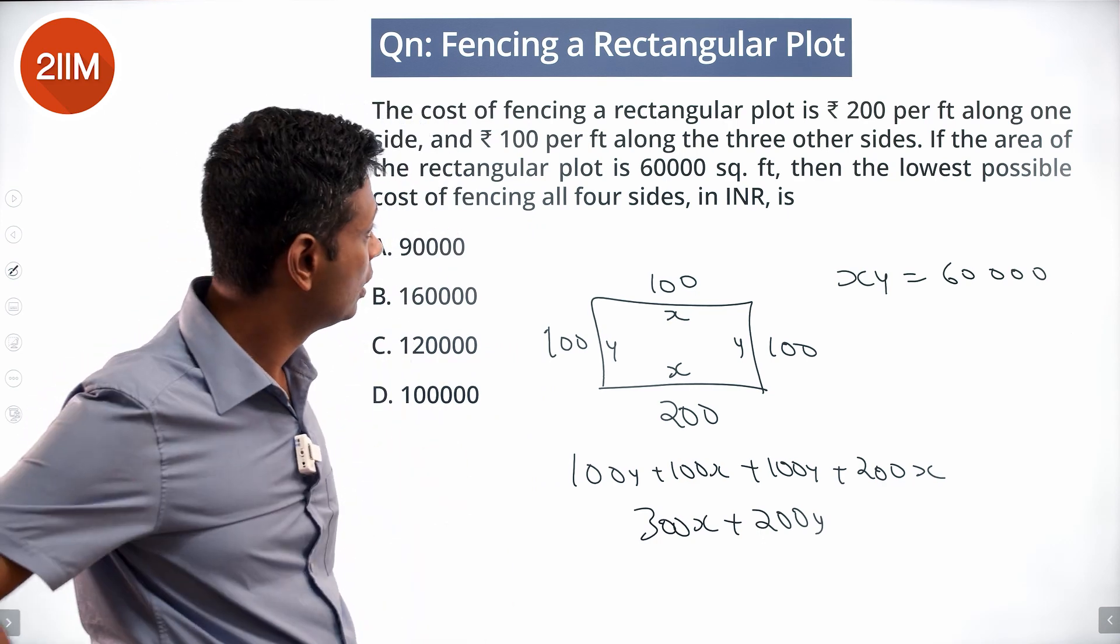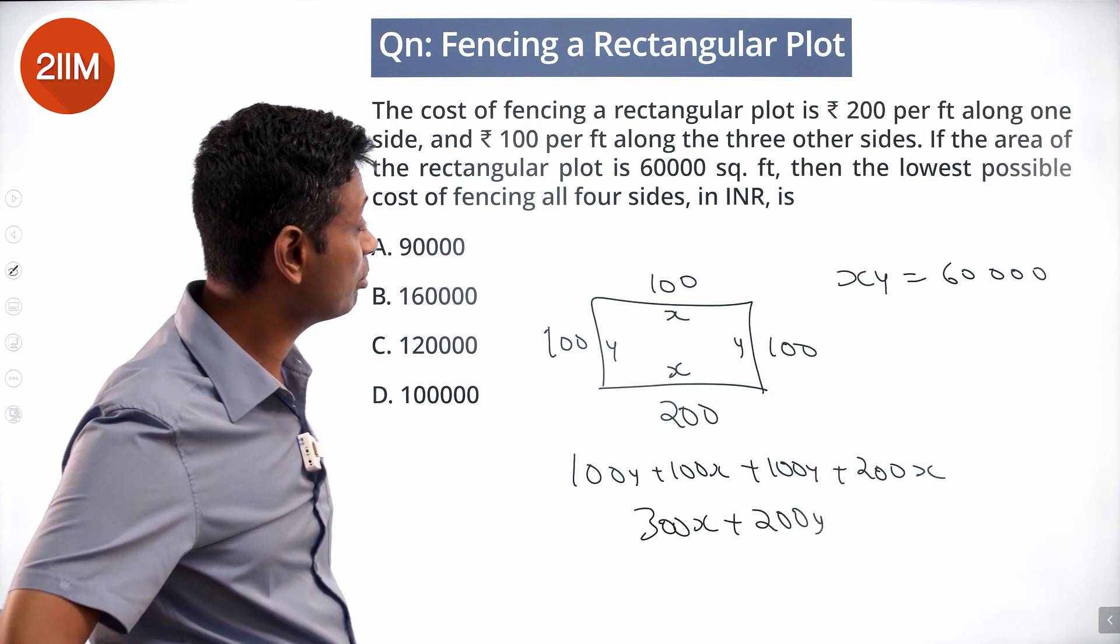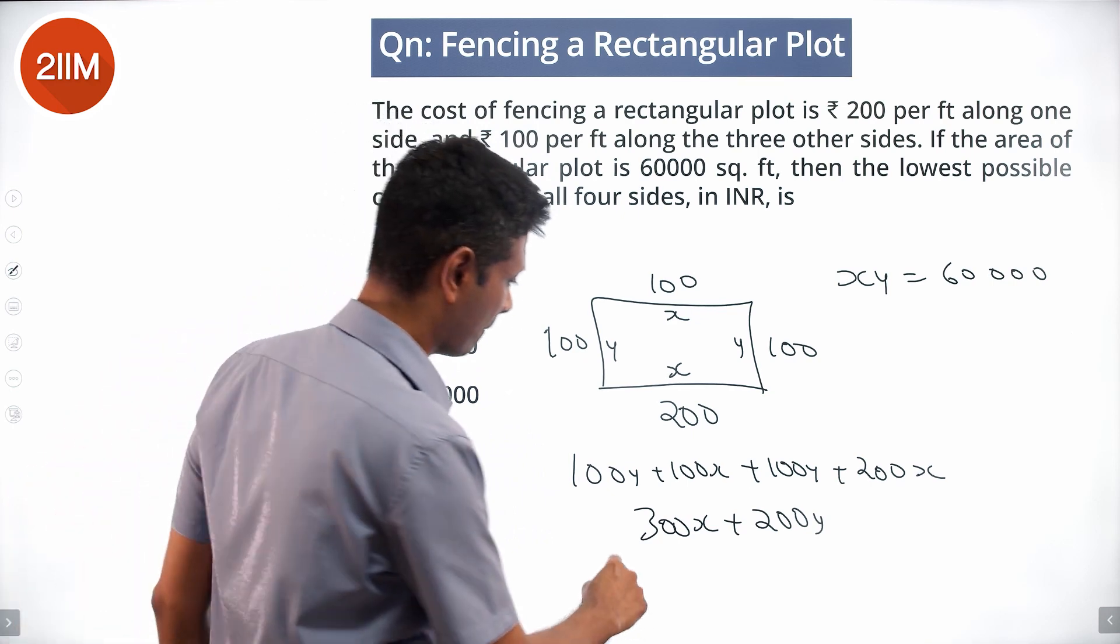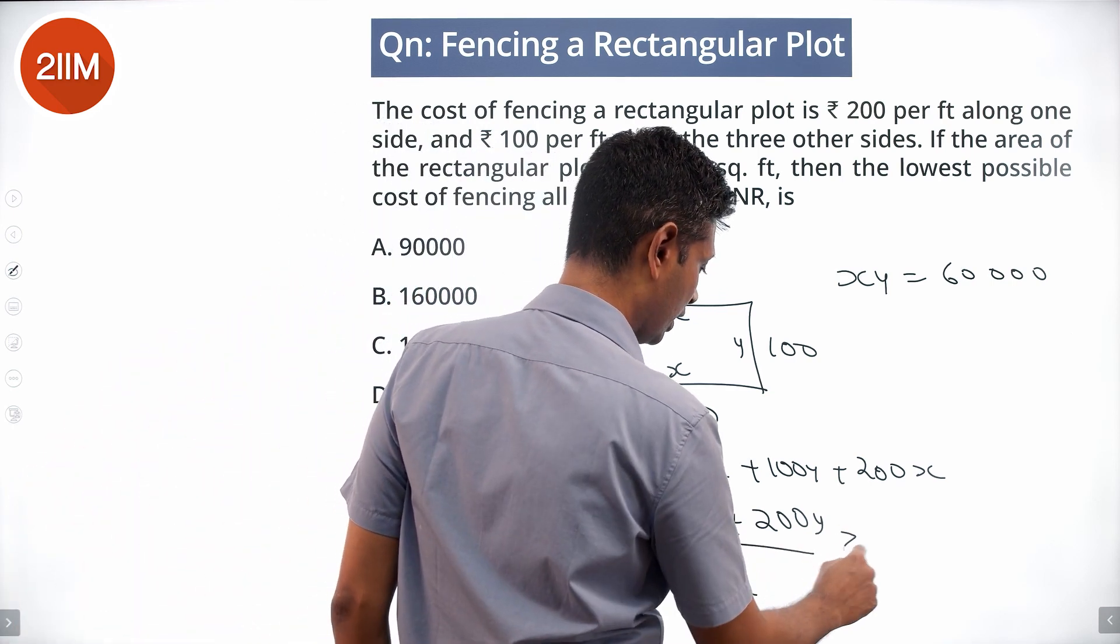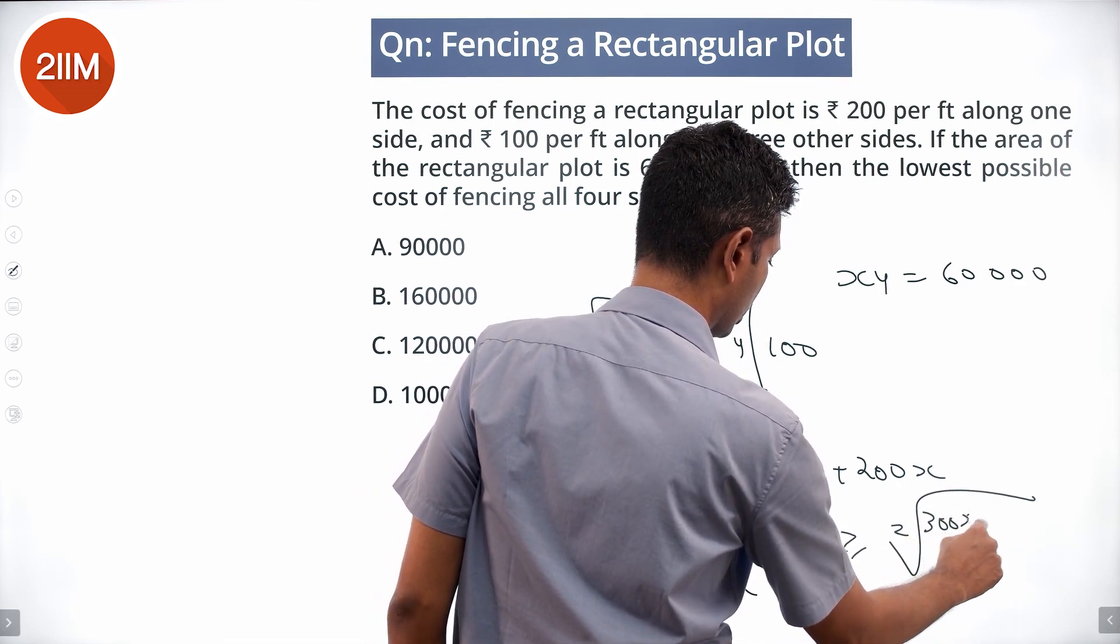We should have a scenario where, keeping in mind that X into Y is 60,000, 300X plus 200Y divided by 2 is greater than or equal to square root of 300X into 200Y.